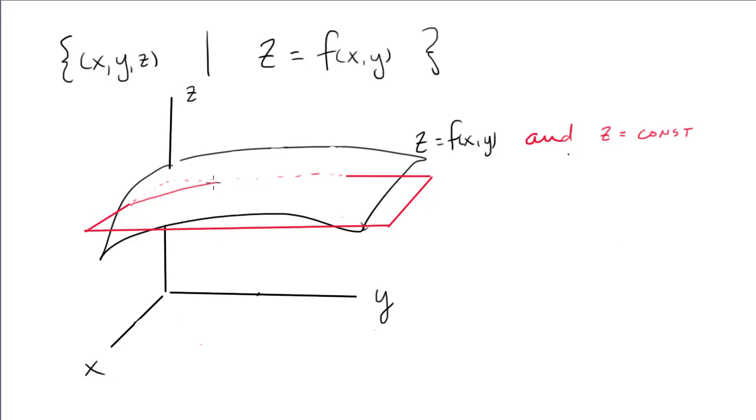Intersect that with the graph and you get a curve. The curve has no Z information, and so you can plot it in the XY plane. Now it's a level curve.